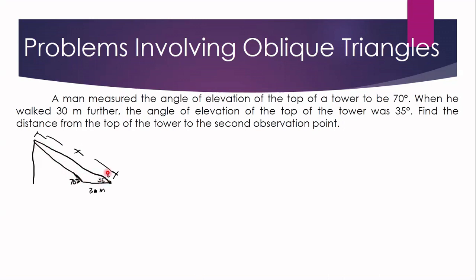You can use either law here — law of sines or law of cosines — but let us use the law of sines for this case. Using the law of sines, we have x over sine of the angle opposite side x. Suppose this angle is theta, so we have x over sine theta. The other given side is 30 meters.